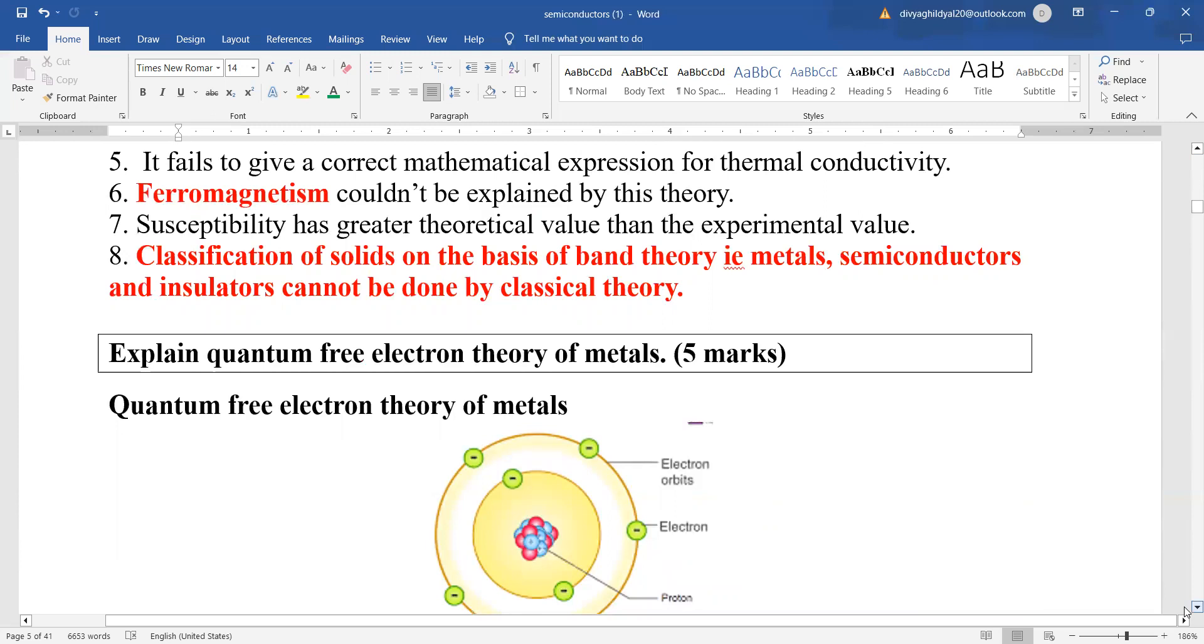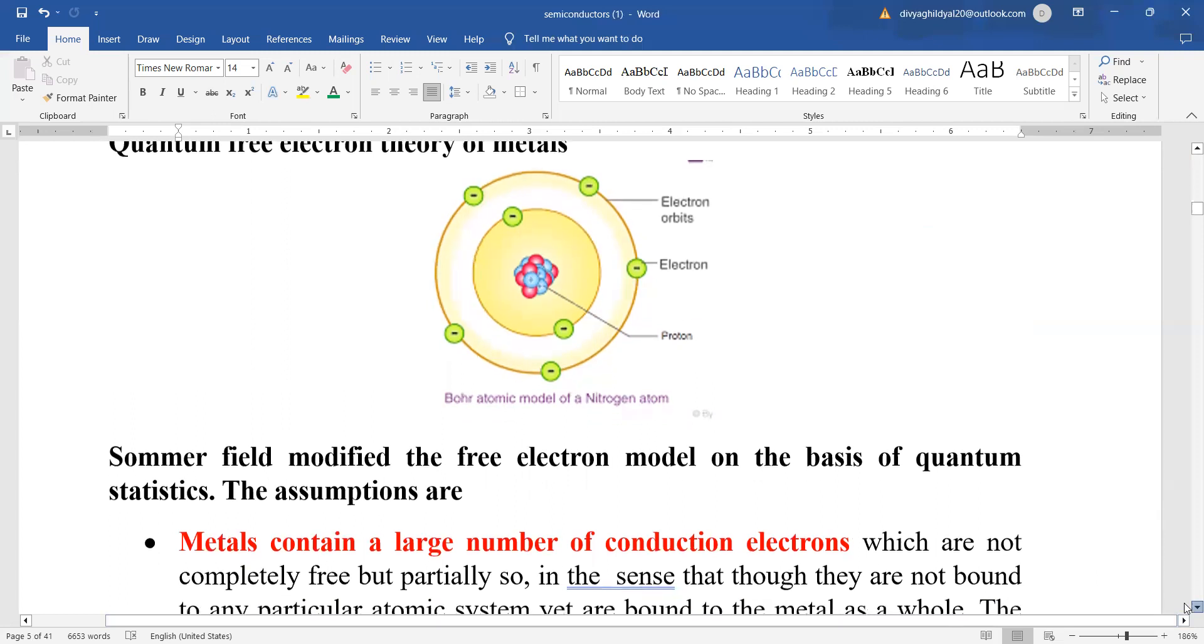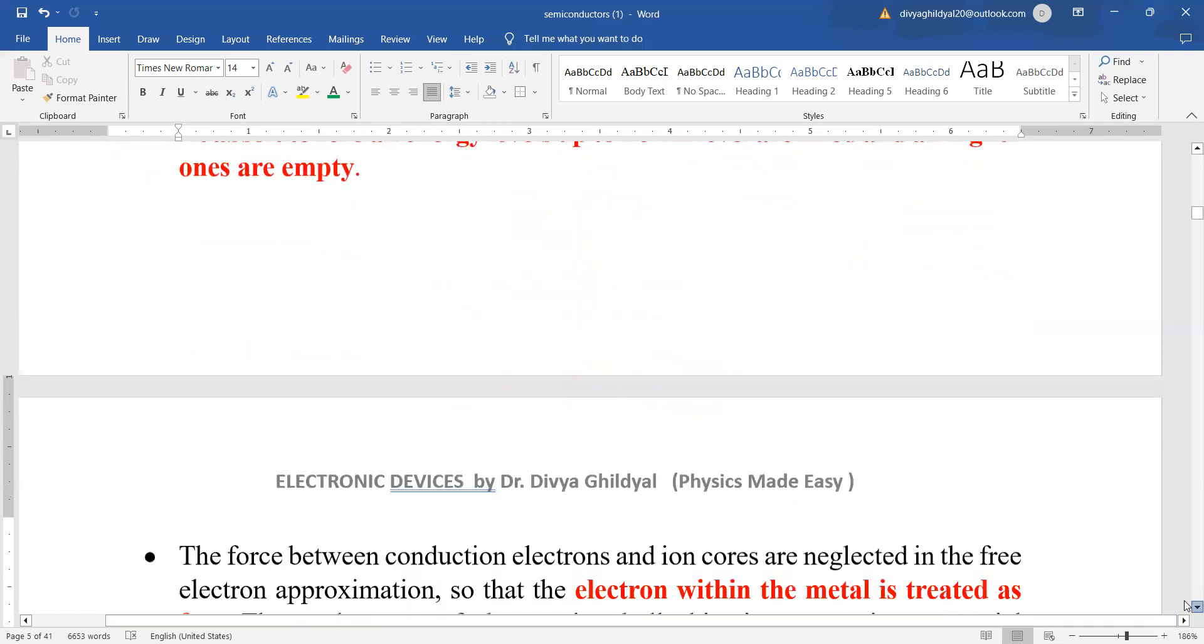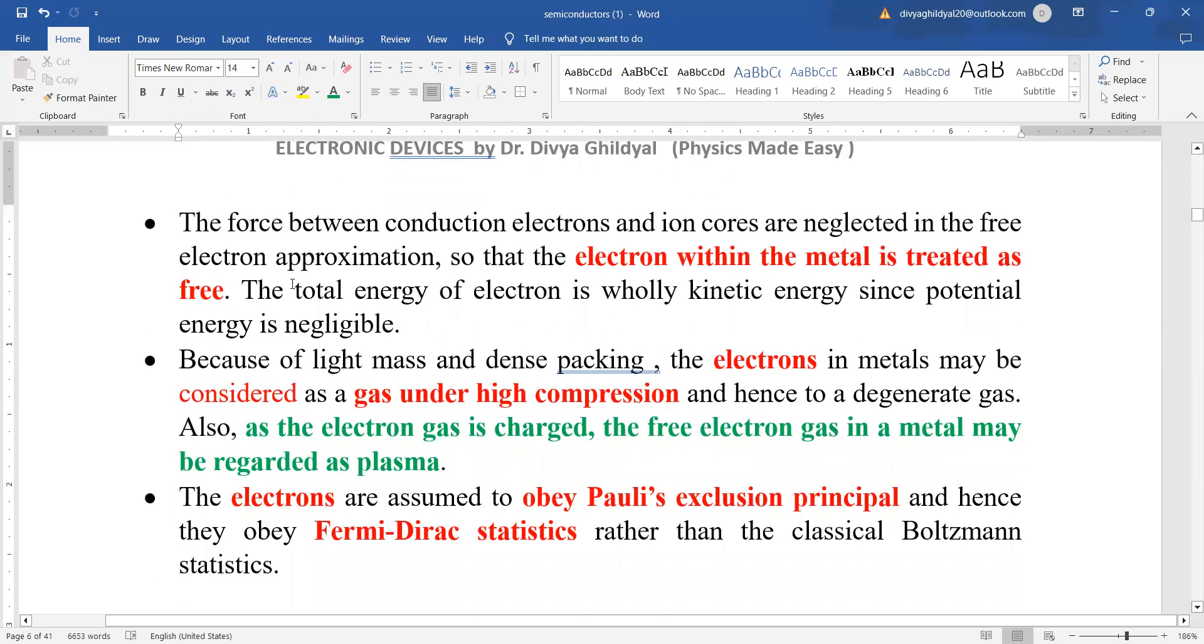Next came up the quantum free theory of electrons. This was explained by Sommerfeld, who modified the free electron model on the basis of quantum statistics. The assumptions for this are that metal contains a large number of conduction electrons, with nucleus at center and electrons in the outer orbits. Metals have large numbers at absolute zero. All energy levels up to Fermi level will be filled and all the higher level ones will be empty. That means up to one specific state they are filled, after that they are empty. And the electron within the metal is being treated as totally free.